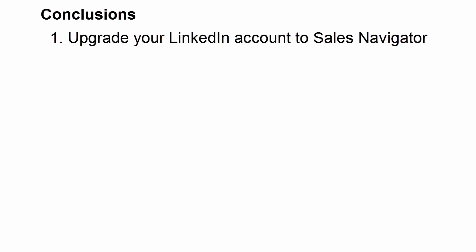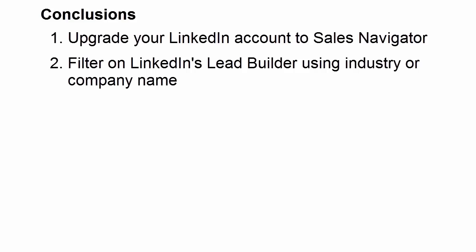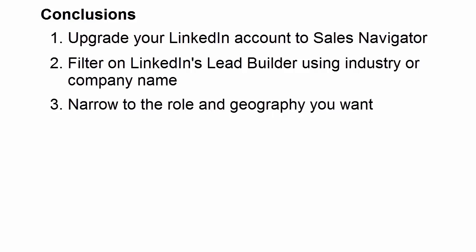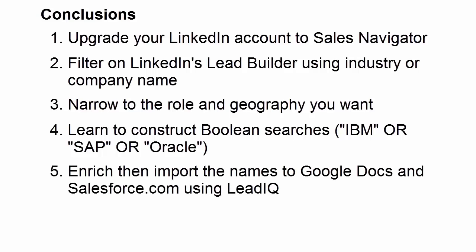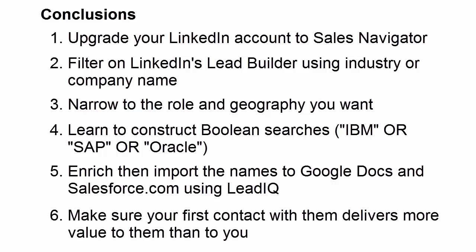Six basic tips. First, upgrade your LinkedIn account to Sales Navigator. Second, filter LinkedIn's Lead Builder using industry or company name — I'll show you how in a second. Third, narrow the role and geography to what you want. Fourth, learn how to construct Boolean searches, like 'IBM OR SAP OR Oracle' in the past company field. Fifth, enrich and import the names into Google Docs and Salesforce.com using LeadIQ. And finally, make sure your first contact with them delivers more value to them than it does to you.